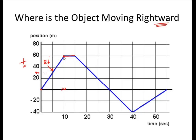At 10 seconds, something happens — the object hits this plateau. Any plateau in a PT graph represents something specific: something is not changing. Time is changing from 10 to 15 seconds, but the thing that's not changing — follow it over to the y-axis — is my position. It stays at 60 meters. Any time I have a plateau on a position versus time graph, that means the object is at rest, at constant position.